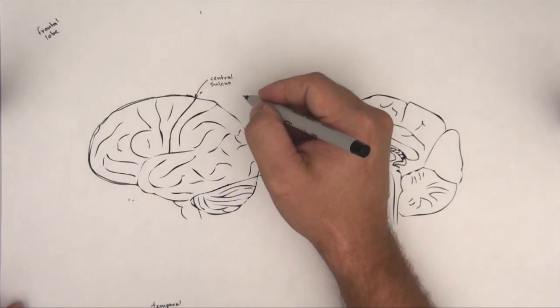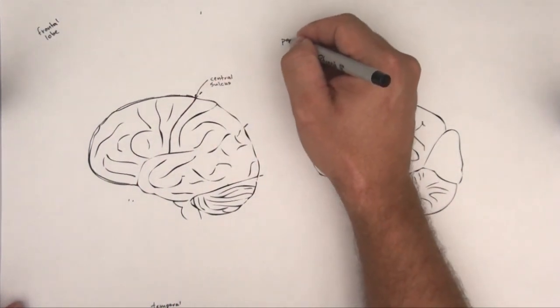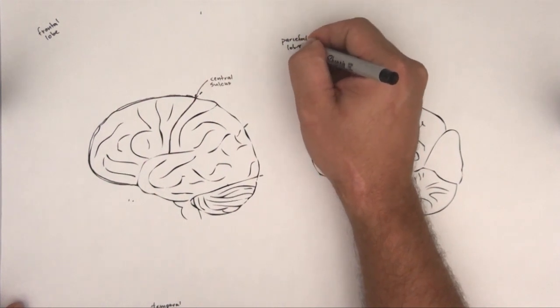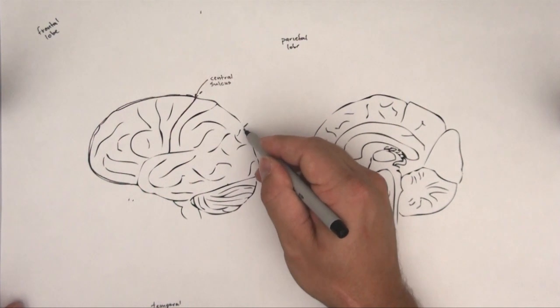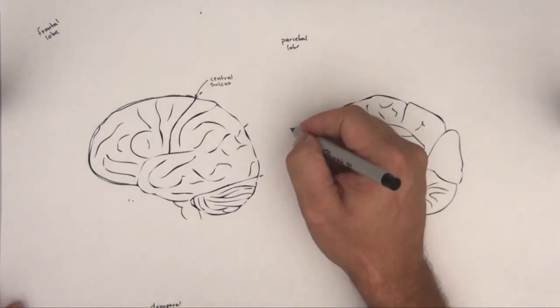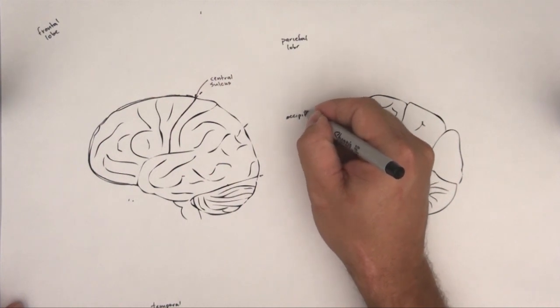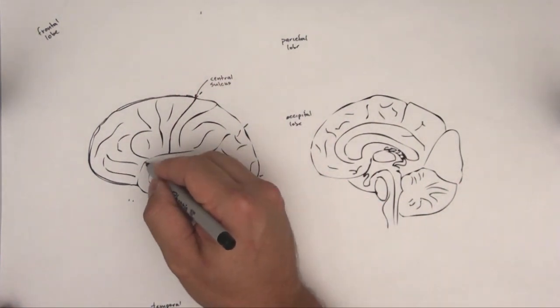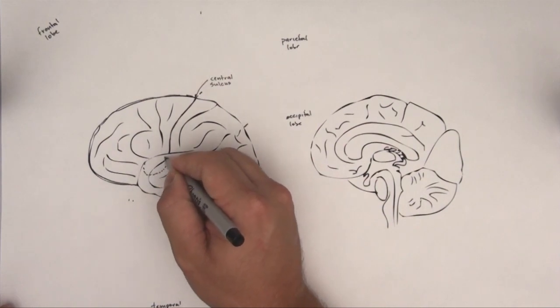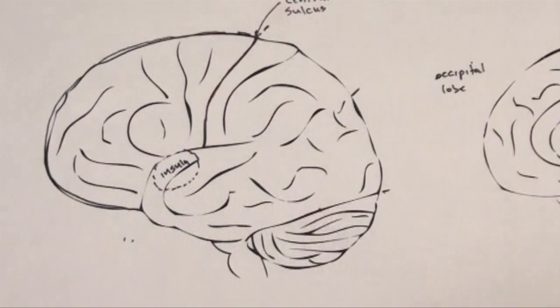This guy back here is the parietal lobe. This area right through here is the parietal lobe. I wanted to keep away from this area right here because this is called the occipital lobe. I've got one more lobe left over, and that one you can't really see. But it's in deep here, and that's called the insula. So those are the lobes of the brain.